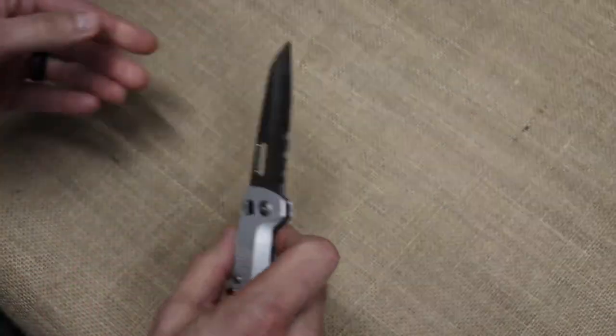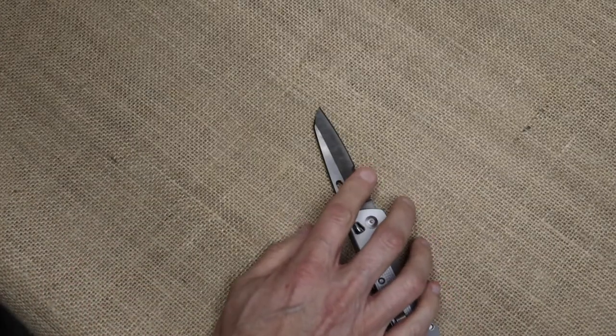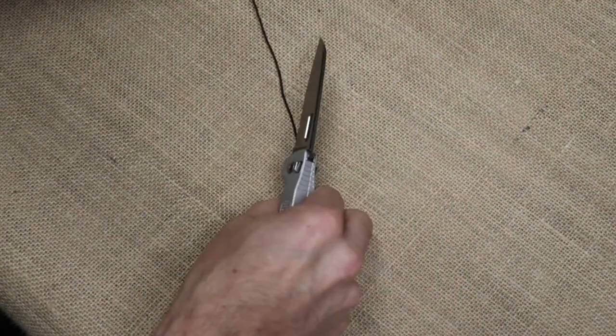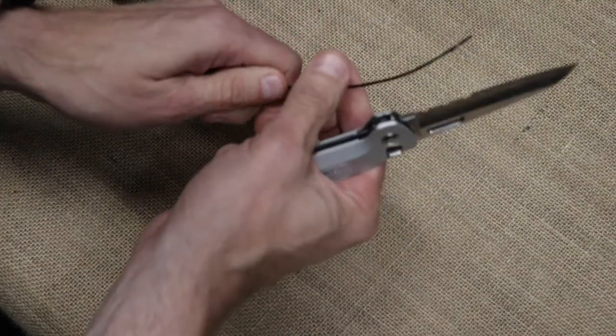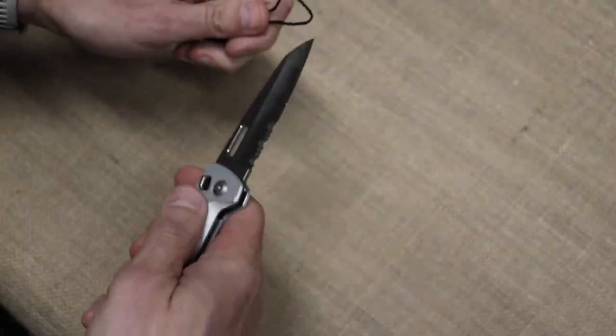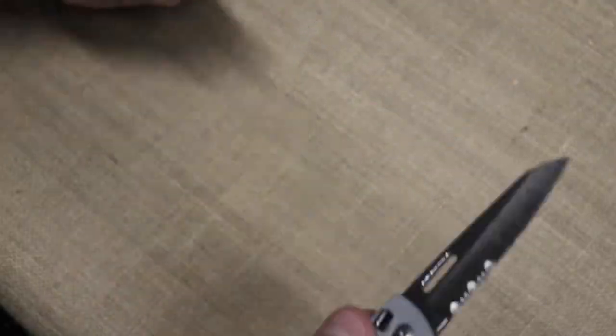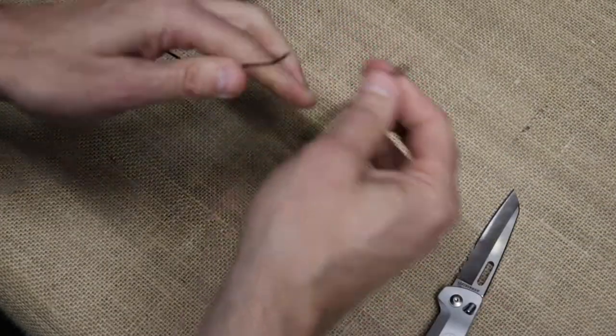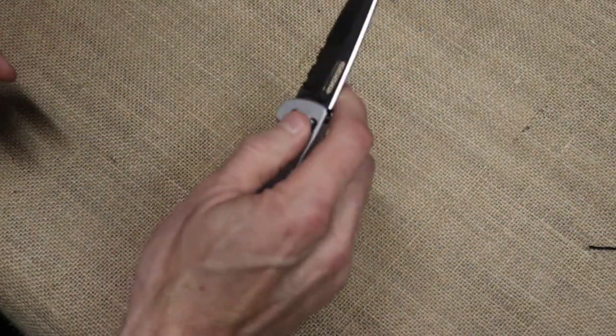Now, the serrated edges are more meant to cut stuff like rope or string. Got some bank line right here. We'll take and see, hack off a little piece of it and see how well it does that. Pretty darn good.